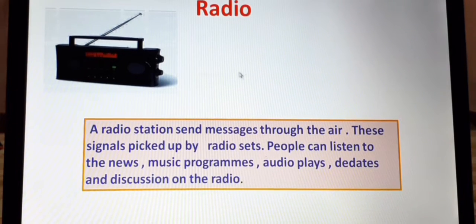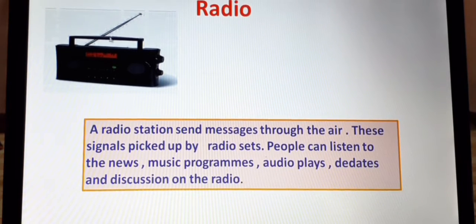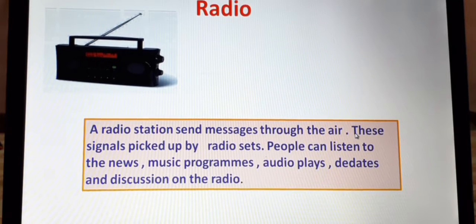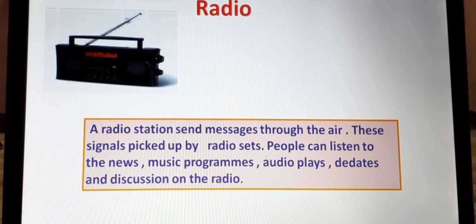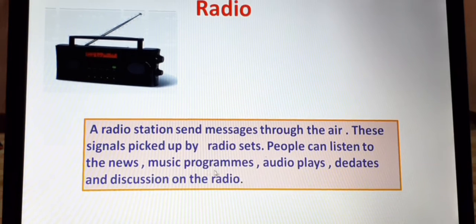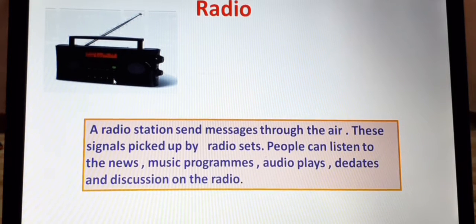Let's talk about the first means of mass communication — radio. You can see there is an antenna connected with this radio. A radio station sends messages through the air. Jo radio station hai, wo message send kertai hai air ke through. These signals are picked up by the radio, and people can listen to the news. You cannot see anything on radio; you can only use it for listening.